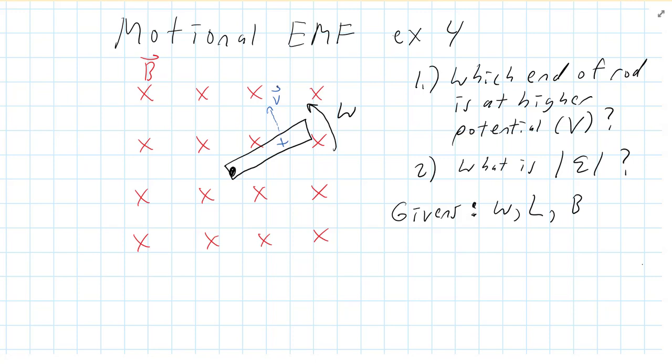And if you point, you take your hand and point your fingers in the direction of the velocity, and then you curl your fingers in the direction of the magnetic field, which is into the page, and stick your thumb out,